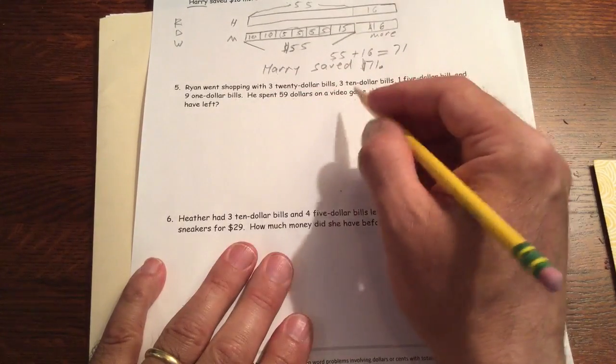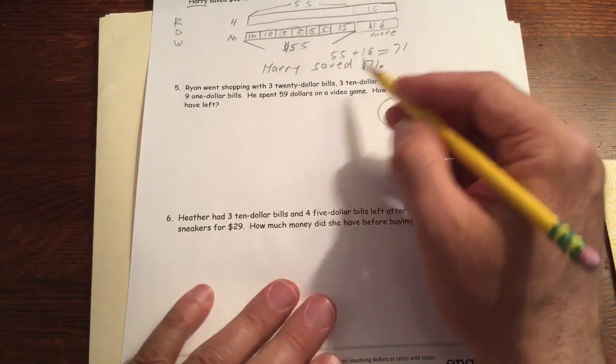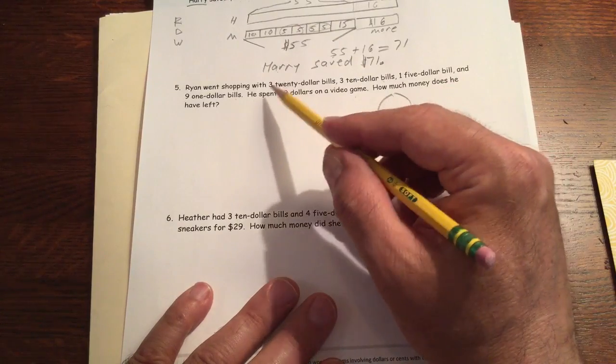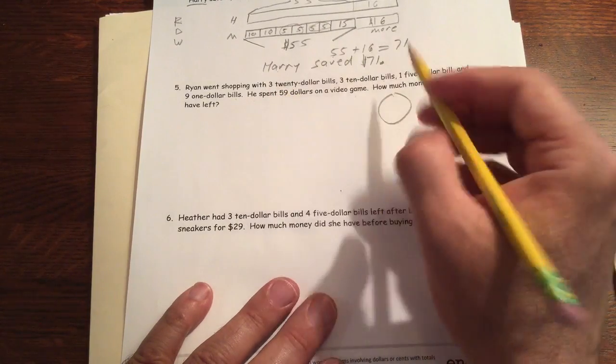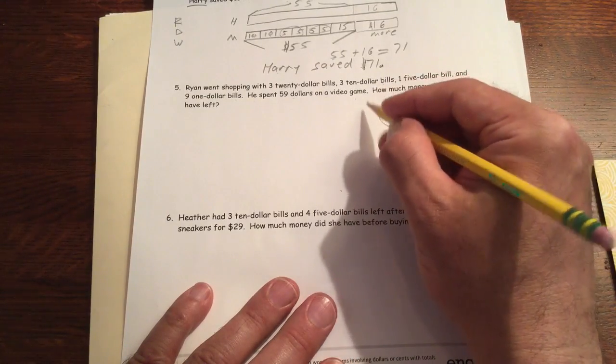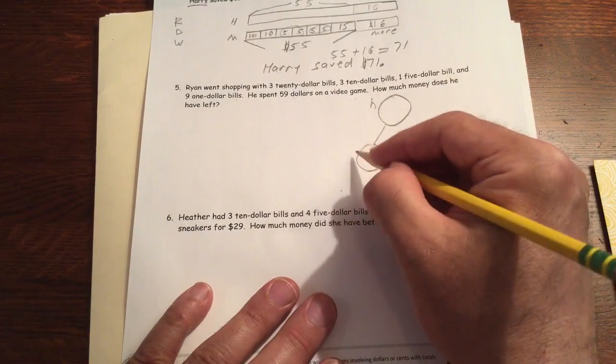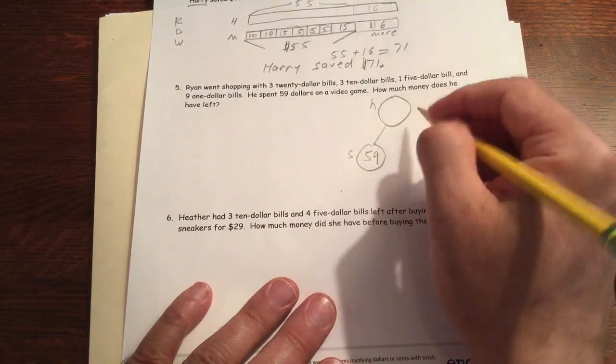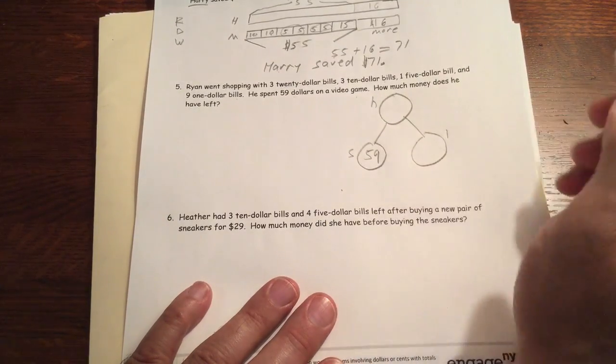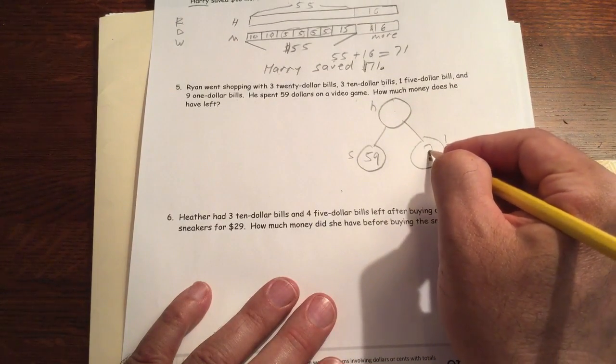So we could make a number bond for this one if we wanted. Just a different way to do it. And you need some kind of a picture just to show the information. So we know that this is how much money he has. This is how much he spent, and this is what he has left. This is what we have to solve for, how much he has left.